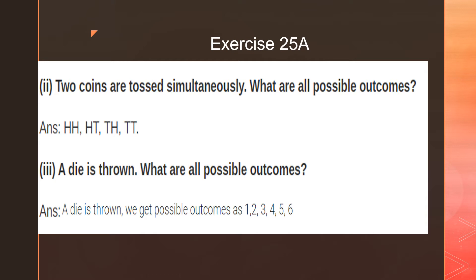A die is thrown. What are all the possible outcomes? A die has six faces, each numbered: one, two, three, four, five, six. So we get six possible outcomes.